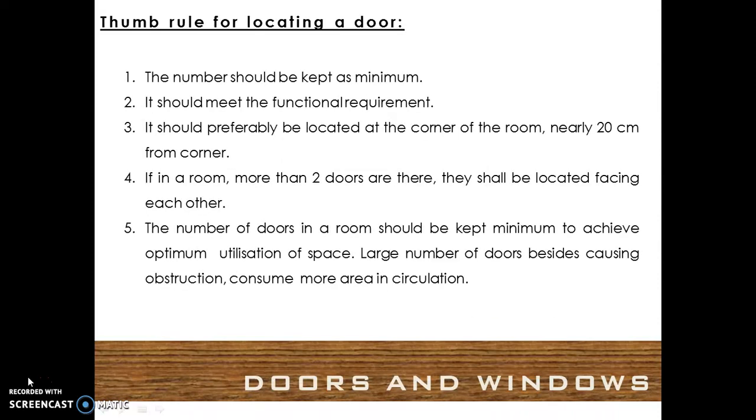The thumb rules for locating a door are: the number of doors in a building should be kept as minimum, it should meet the functional requirements, it should preferably be located at the corner of a room nearly 20 cm from the corner. If in a room more than two doors are there, they shall be located facing each other.